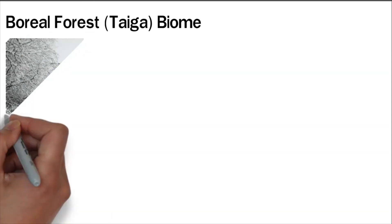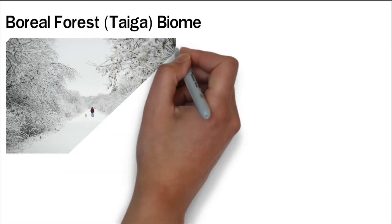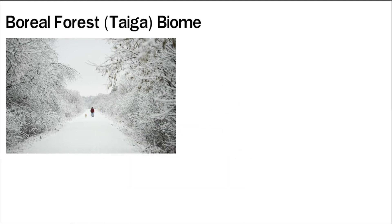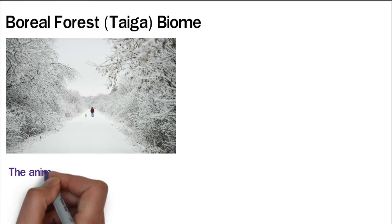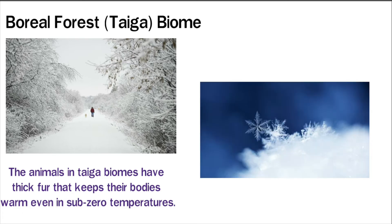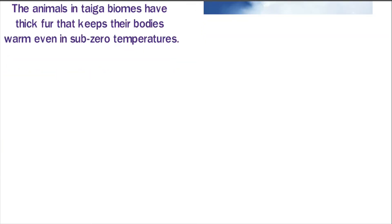Boreal forest taiga biomes are categorized by long dry winters and are found at higher latitudes. These regions are mainly made up of coniferous trees with needle-like leaves. The animals in taiga biomes have thick fur that keeps their bodies warm even in subzero temperatures. Precipitation mainly occurs in the form of snow in boreal biomes.